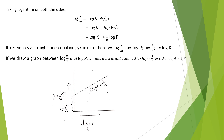This expression is in the form of a straight line equation y = mx + c. Here, y = log(x/m), x = log P, m (slope) = 1/n, and c (intercept) = log k. So when a graph is plotted between log(x/m) and log P, a straight line is obtained with slope 1/n and intercept log k.